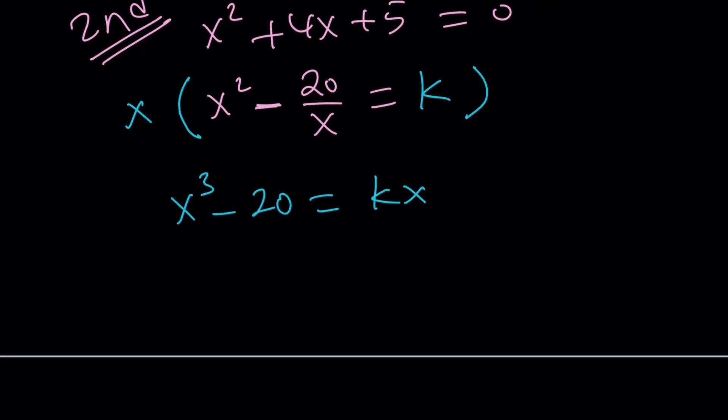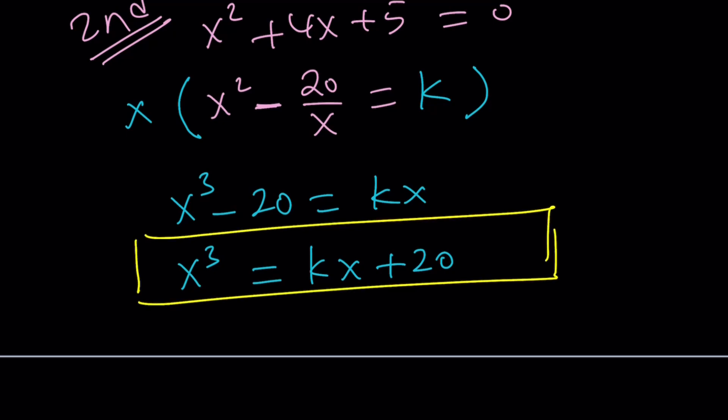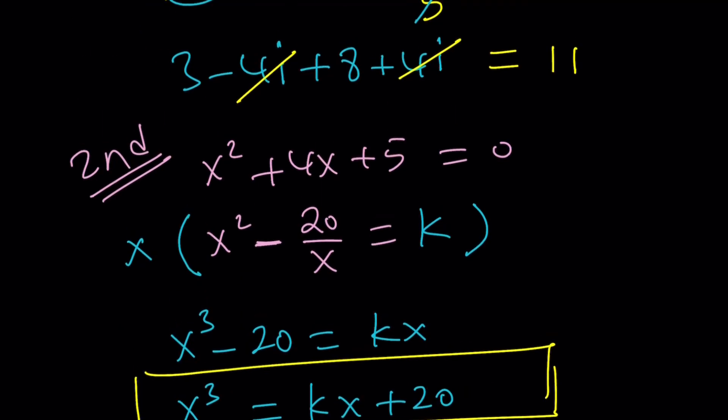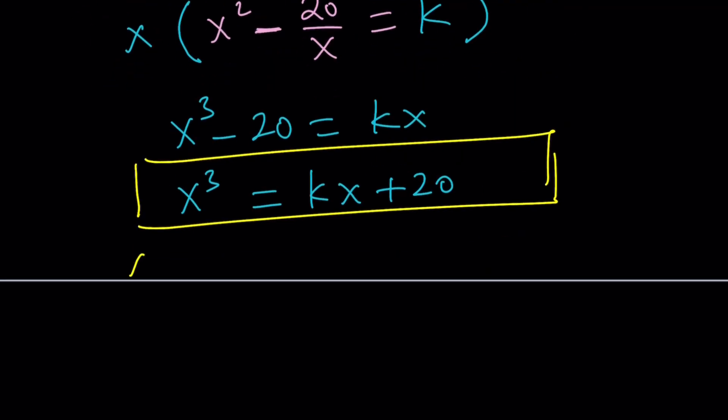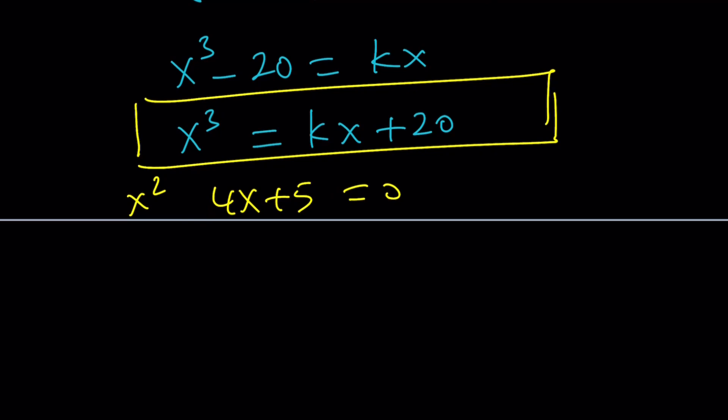Let's isolate x cubed and write it as kx plus 20. This is the critical part. I got x cubed in a linear form. I can do the same thing here. Let's take x squared plus 4x plus 5 equals 0 and isolate x squared. We get x squared equals negative 4x minus 5.